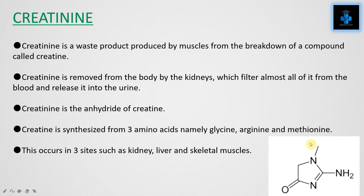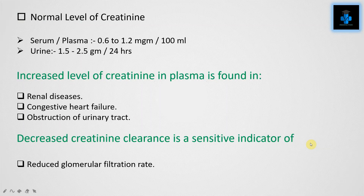Creatinine is a waste product produced by muscles from the breakdown of creatine. It is removed from the body by the kidneys, which filter almost all of it from the blood and release it into the urine. Creatinine is the anhydride of creatine and is synthesized from three amino acids: glycine, arginine, and methionine. This synthesis occurs in three sites: the kidney, liver, and skeletal muscles. The normal level of creatinine in serum or plasma is 0.6 to 1.2 mg per 100 mL; in urine it is 1.5 to 2.5 grams per day.